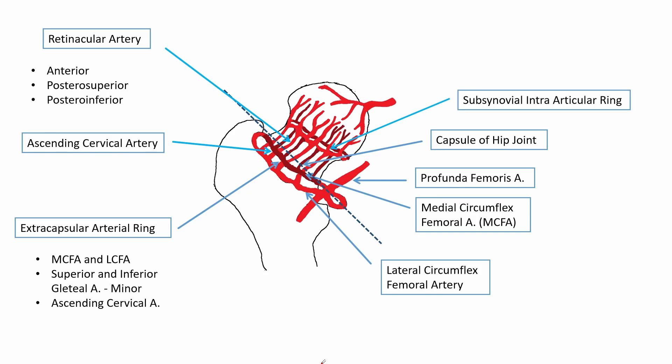At the level of the base of the head, or the head-neck junction, these arteries form the subsynovial intra-articular ring, which gives off the epiphyseal arteries that supply the head. Of note is the lateral epiphyseal artery, which enters the femoral head at the posterosuperior part and supplies the majority of the weight-bearing area of the femoral head. The lateral epiphyseal artery derives its supply mainly from the medial circumflex femoral artery, so any injury to this may lead to AVN of the weight-bearing part of the femoral head.